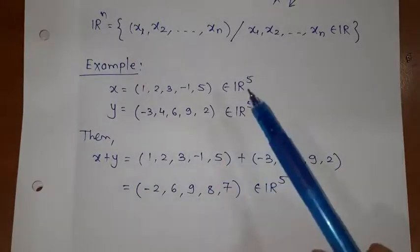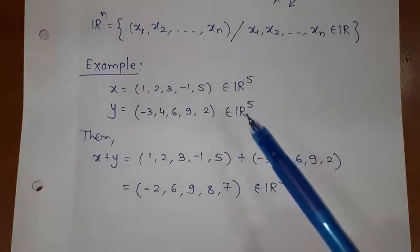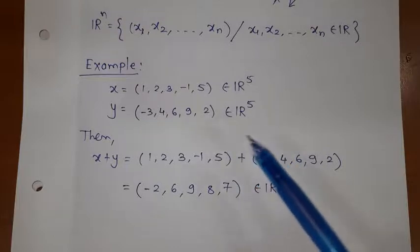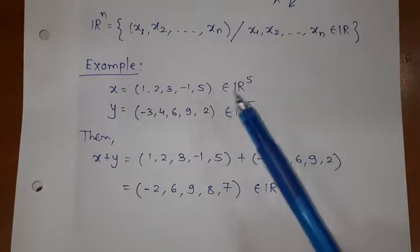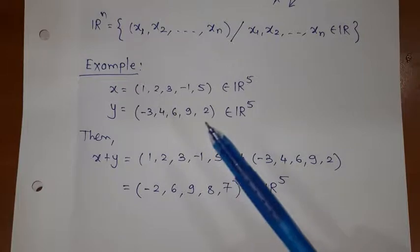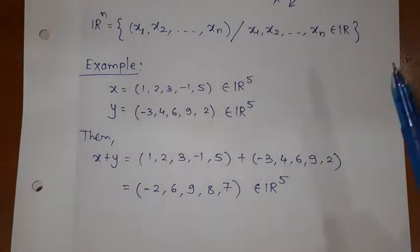When you have two elements of R^5 or two elements of R^7, whatever R^n, you can add or subtract. But the compulsion is both should be elements of R^n. One element of R^n and second element of R^m, you cannot add or subtract.